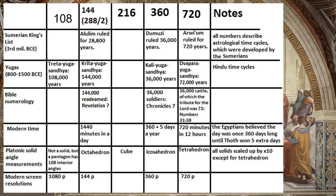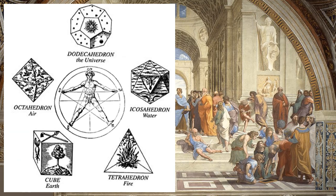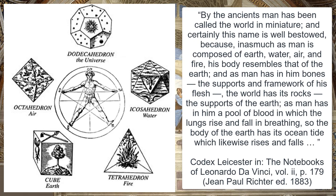All of the Platonic solids were drawn by da Vinci at some point in his life, and most of these numbers appear across various religions and systems of measurement. It was a Platonic tradition to liken each of the Platonic solids to one of the four alchemical elements.